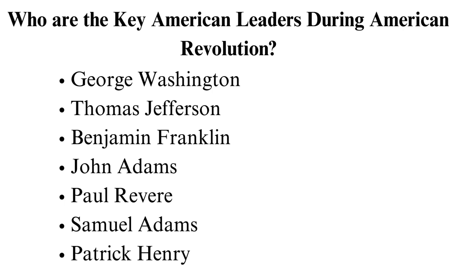John Adams was a lawyer and statesman who served as a delegate to the Continental Congress and became the second President of the United States. Paul Revere was a silversmith and patriot for the Continental forces who warned the colonists that British troops were coming. Samuel Adams was a political organizer and Sons of Liberty leader, a movement that opposed British authority. He helped the colonists immensely during the American Revolution.